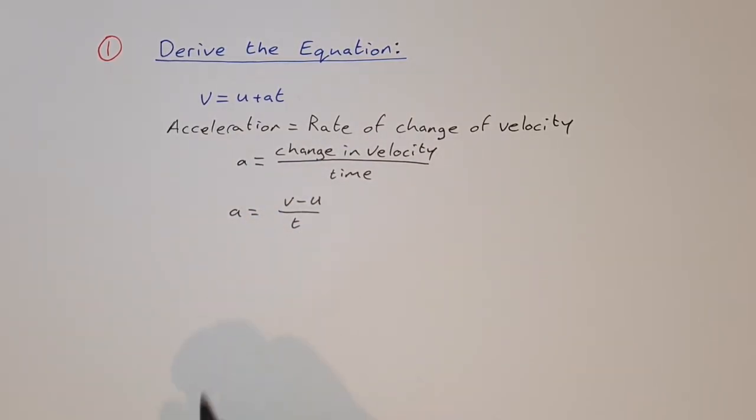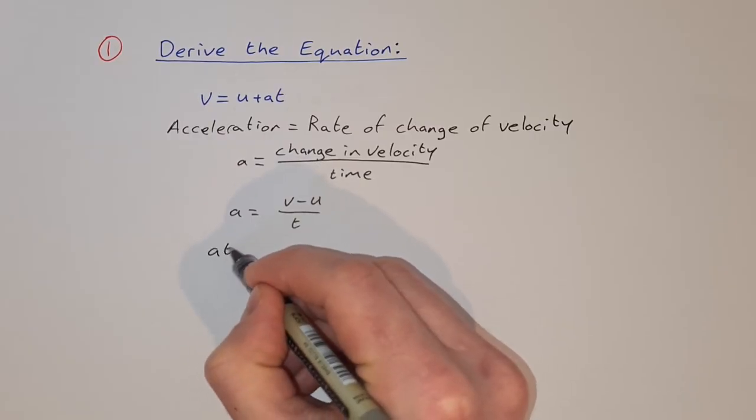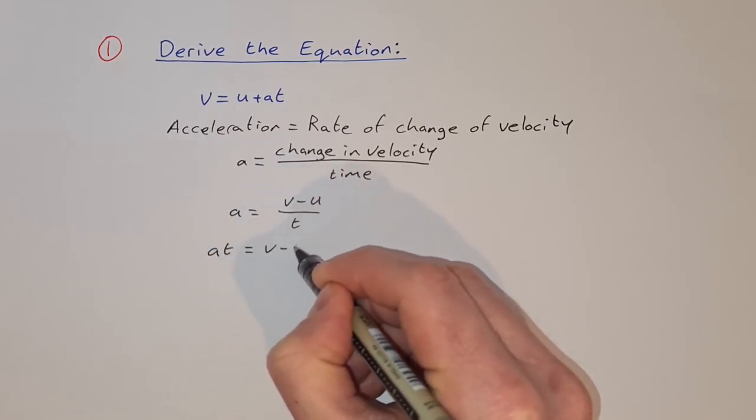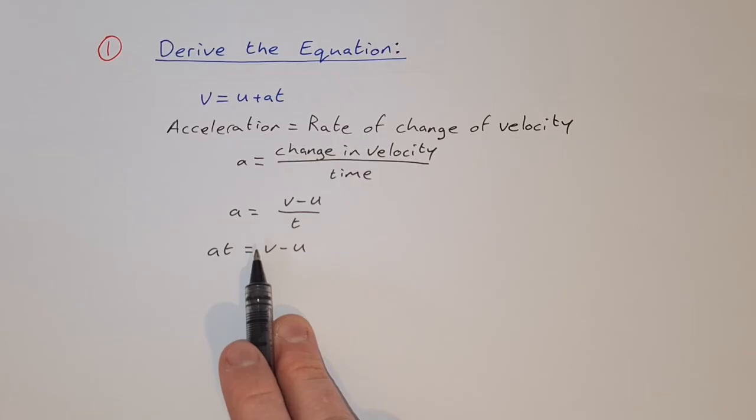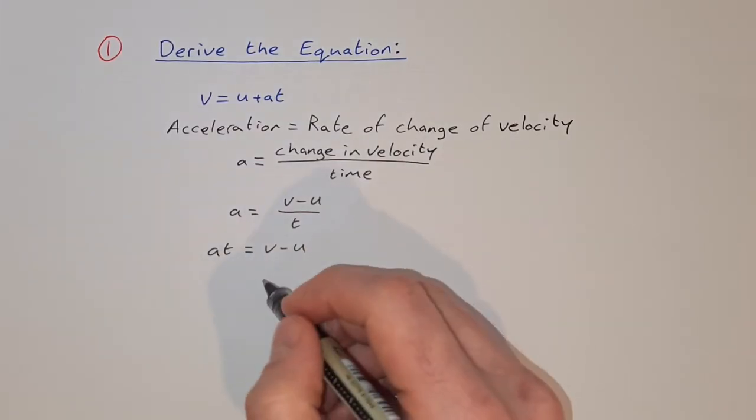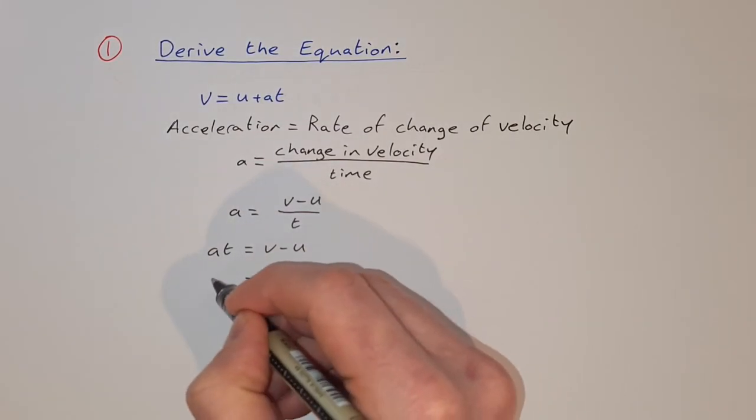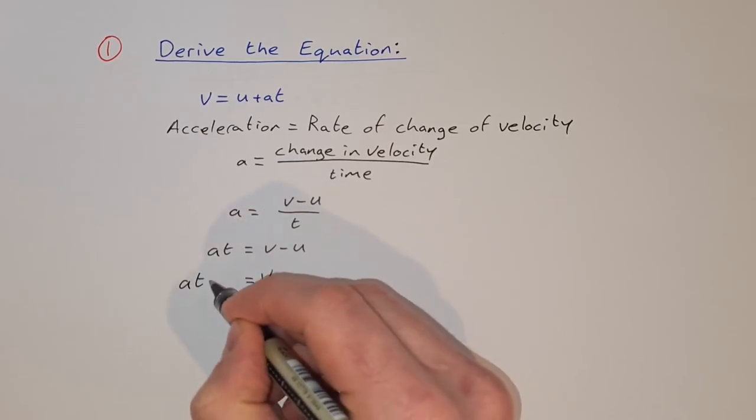So we multiply across by t to get a t is equal to v minus u. And now we just rearrange this formula to get v on its own. So v is equal to a t plus u.